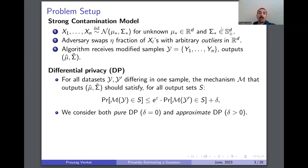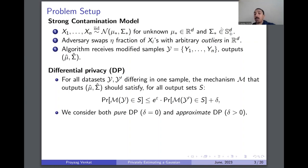For the model of privacy, we consider differential privacy. Roughly speaking, differential privacy asserts that for all data sets y and y prime which differ in a single sample, the mechanism m which outputs the estimates mu hat and sigma hat should have output distributions which are close on data sets y and y prime. Here epsilon and delta are called the privacy parameters. We consider both the pure DP model in which delta equals zero and the approximate DP model in which delta is positive.